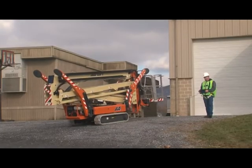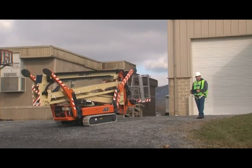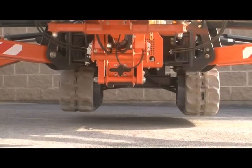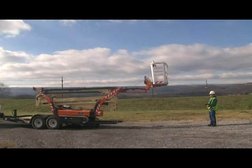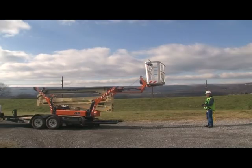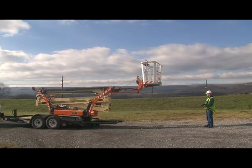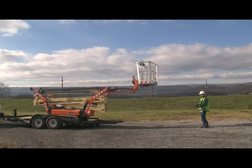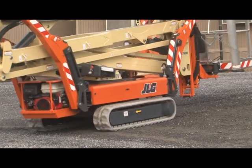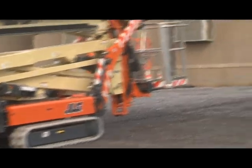When operating with the remote control out of the holder and connected to the platform cable, you can only operate the drive, track widening, jib, and outrigger functions. Operating in this position allows you to maintain a safe distance while loading and unloading the machine, and while driving on steep grades. Keep a minimum distance of three feet or one meter from the tracks.